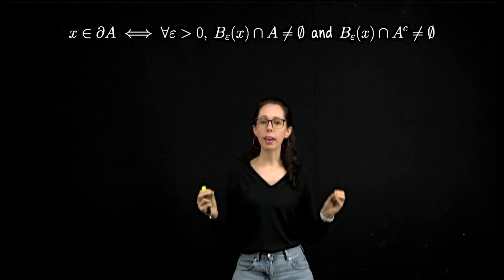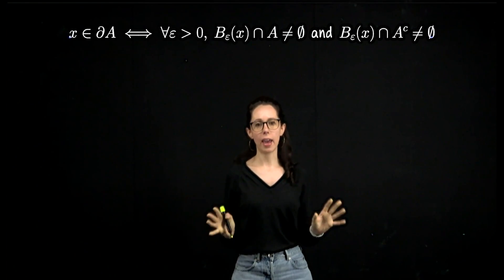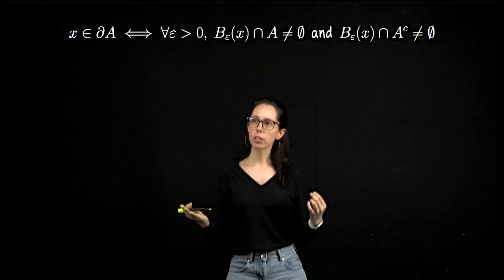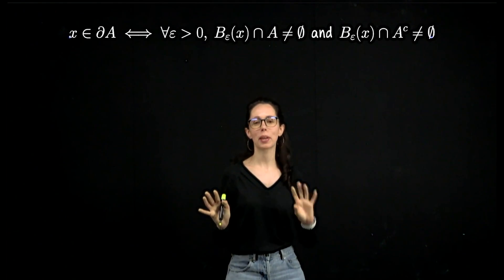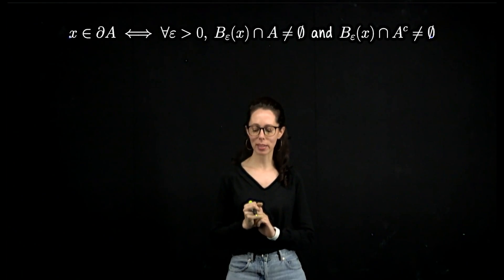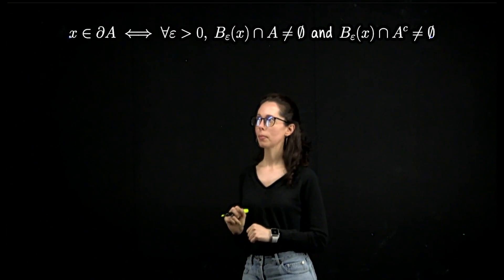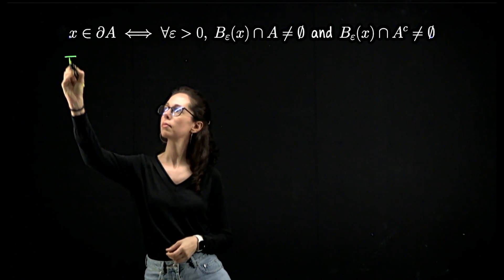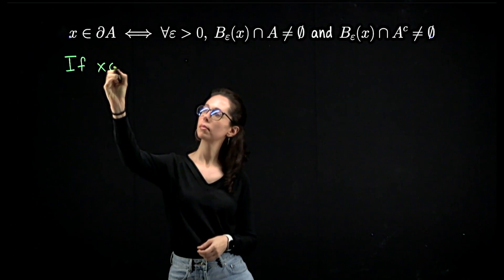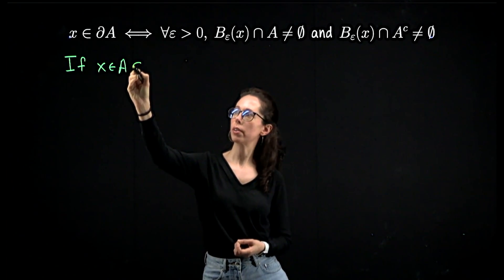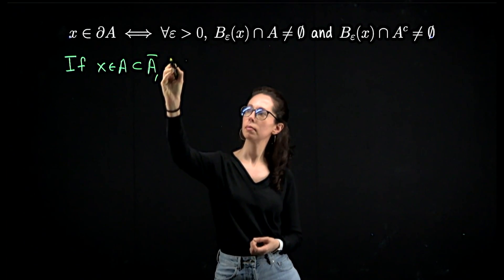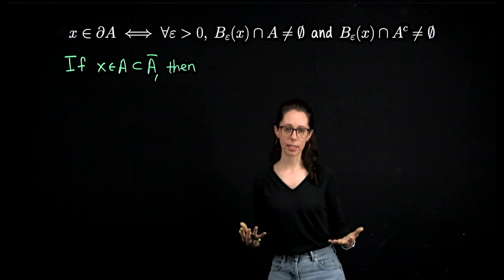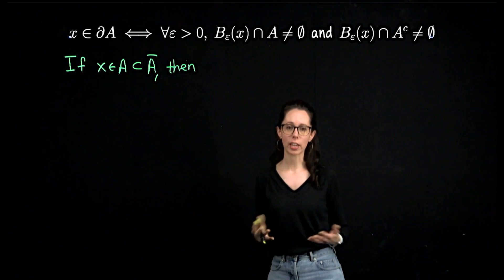We will do the first case, and then the second case will be faster because of the symmetry between A and A complement in the definition and in the statement. For our first case, let's consider that X is in A. If it's in A, then it's in the closure of A. So it's already in one of the sets in the intersection in the definition of boundary. That means it's enough to say that X is in the boundary of A if and only if X is in the closure of A complement.